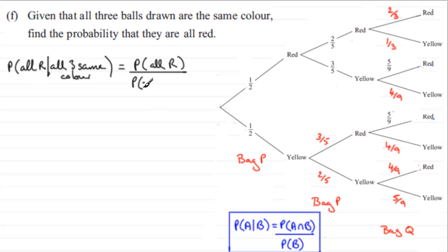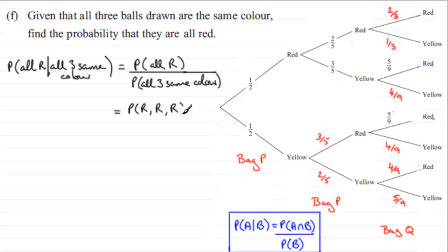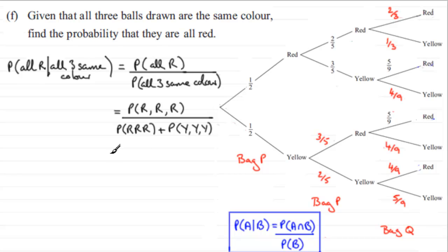We divide that by the given probability — the probability that all three are the same color. The probability that all are red is the probability of getting red, red, and red. The denominator is the probability of all three being the same color, which could be getting three reds or getting three yellows — red, red, red or yellow, yellow, yellow.